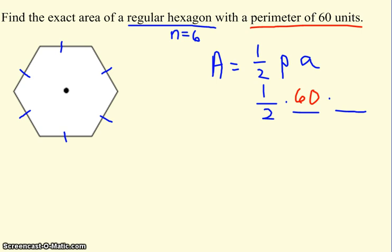So this doesn't seem so bad. All I have left to do is figure out what the apothem is. Once I know that, I can just multiply everything together. One thing to note is that it says to find the exact area. That means no decimals are going to be allowed in your answer, so if you use your calculator, be careful. All right, let's get started.